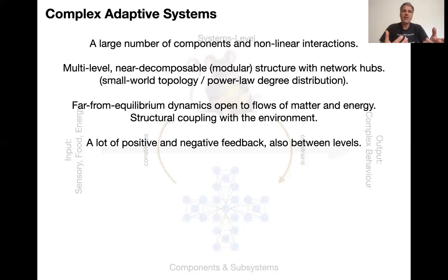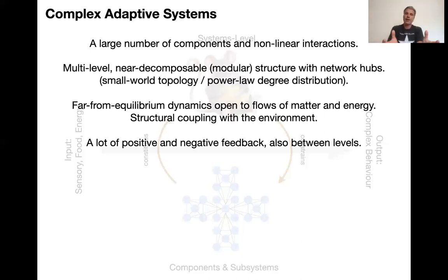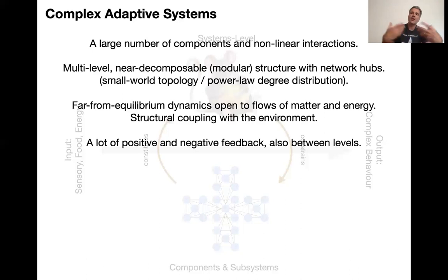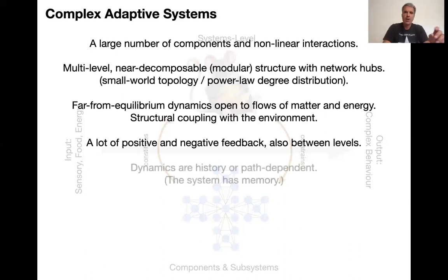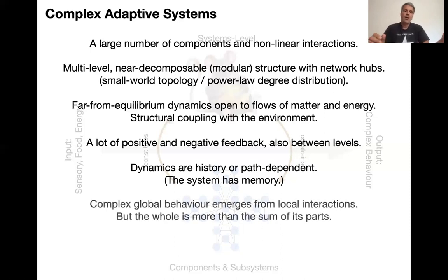There's a lot of positive and negative feedback, not only between components of the molecular or subnetwork level, but also between the system as a whole and the level of its components — they influence each other reciprocally. This is where reductionism obviously fails, because it assumes that all the behavior can be reconstructed from decomposing the system into its component parts. Dynamics are history- or path-dependent, so complex adaptive systems need memory; otherwise they cannot adapt. And complex global behavior emerges from local interactions — the whole is more than the sum of its parts. Otherwise it's just an aggregate.